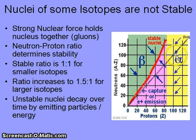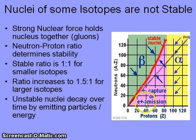The regions of the chart show beta decay, alpha decay, and either electron capture or positron emission. The contents of this slide are also very applicable to the short video, The Island of Stability.